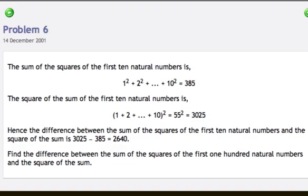Hence, the difference between the sum of the squares of the first 10 natural numbers and the square of the sum is 3025 minus 385 equals 2640. Find the difference between the sum of the squares of the first 100 natural numbers and the square of the sum.